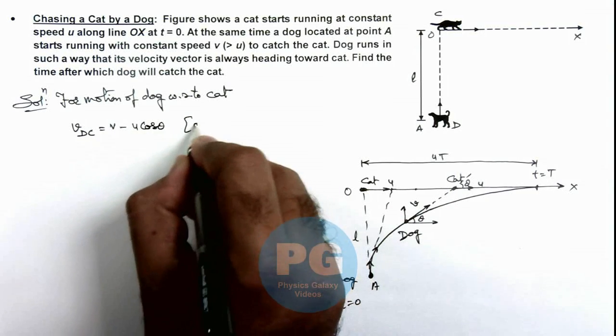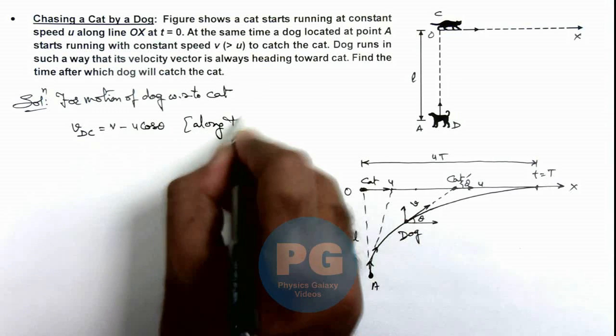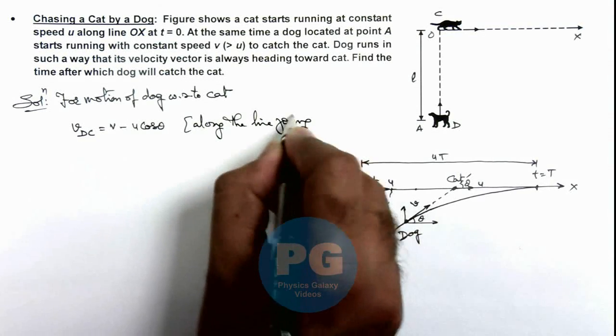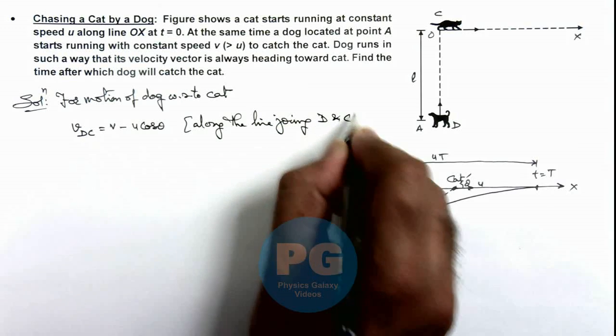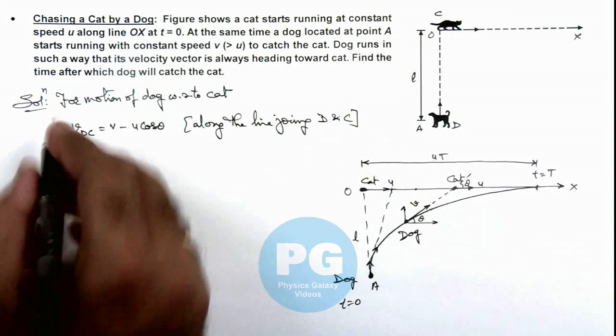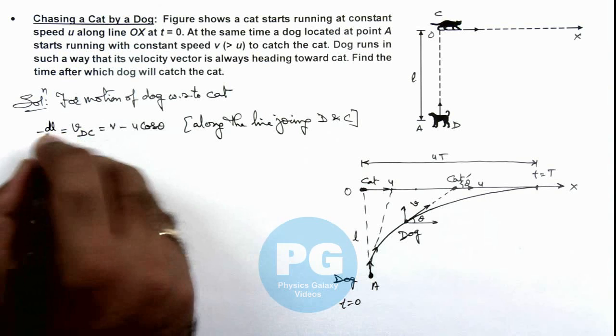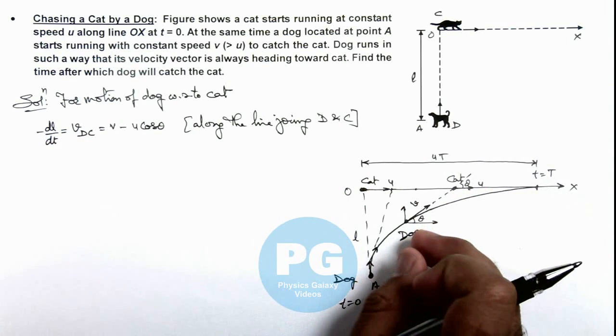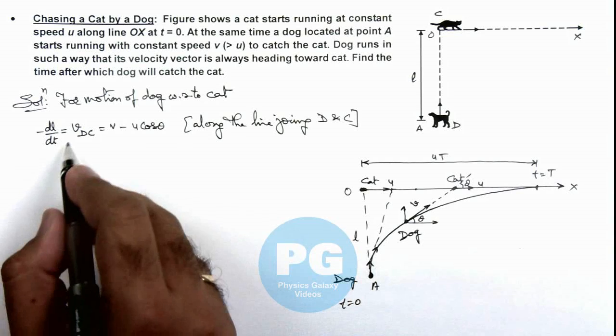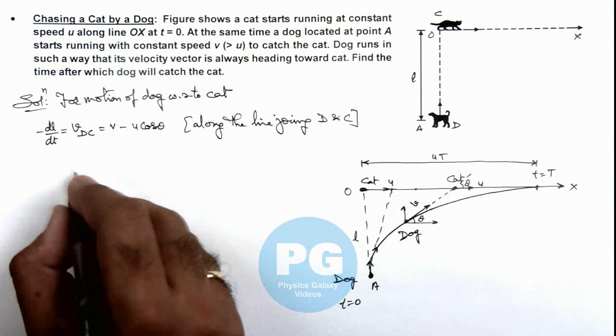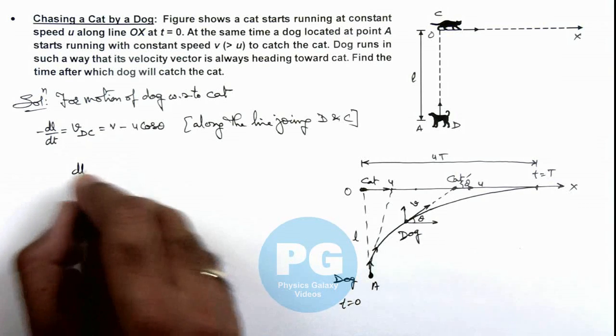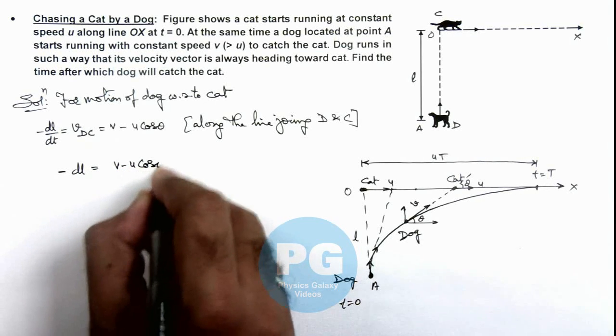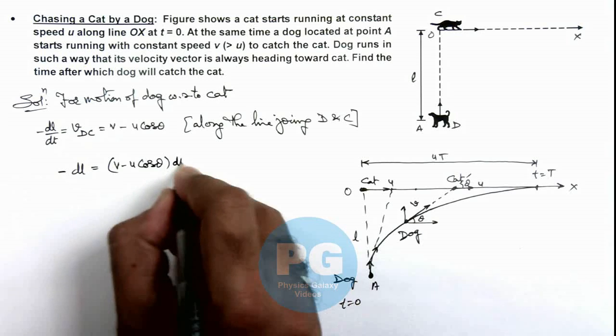This is along the line joining dog and cat. And this v d c we can write as minus of d l by d t because with time this l is continuously decreasing. So here we can write this term as d l with negative sign is equal to v minus u cos theta d t.